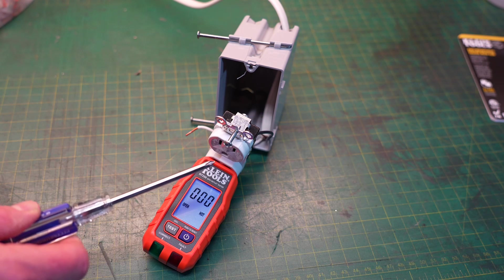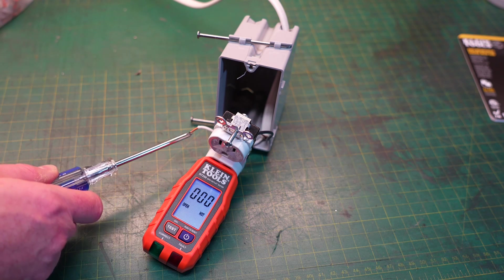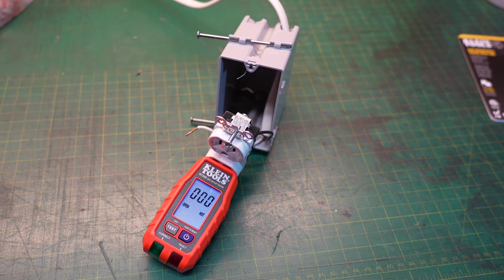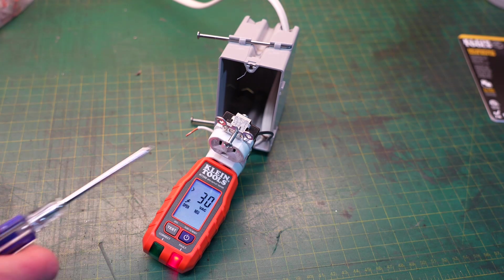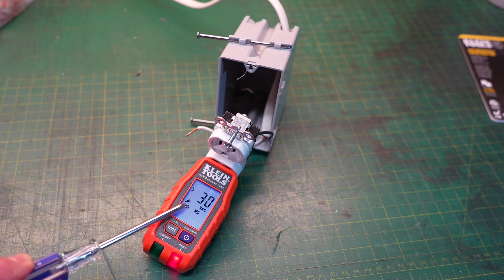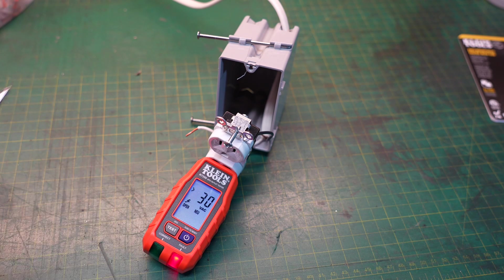In this scenario we have reconnected the ground and we have taken the common wire and disconnected it. I've restored power and it is telling us that we have over 30 volts detected but we have an open neutral and the common wire is our neutral. So again the tool works perfectly.